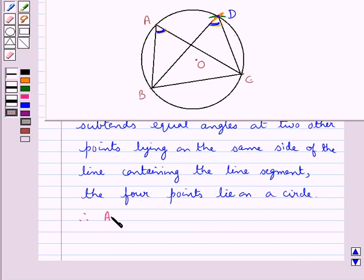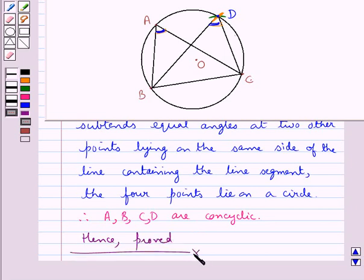that is A, B, C, D are concyclic. That is they lie on a circle. So hence proved. This completes the session. Hope you have understood the solution for this question.